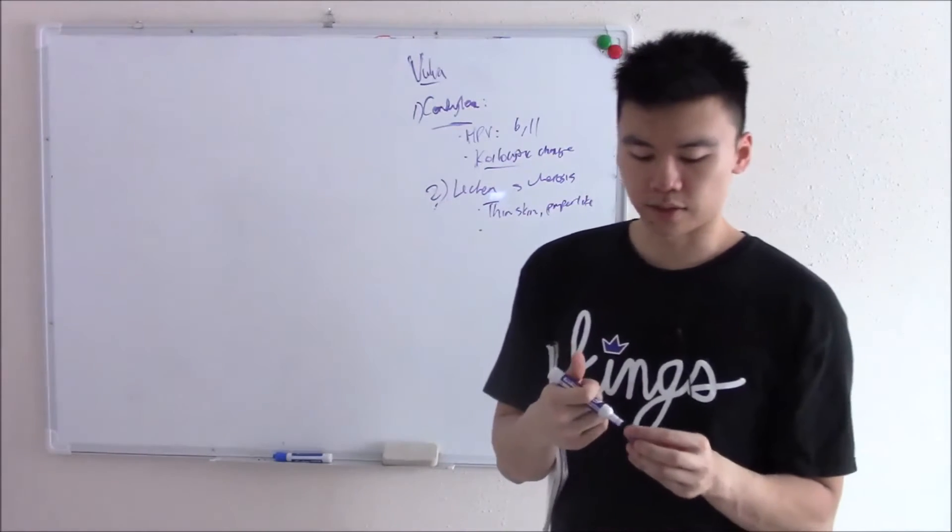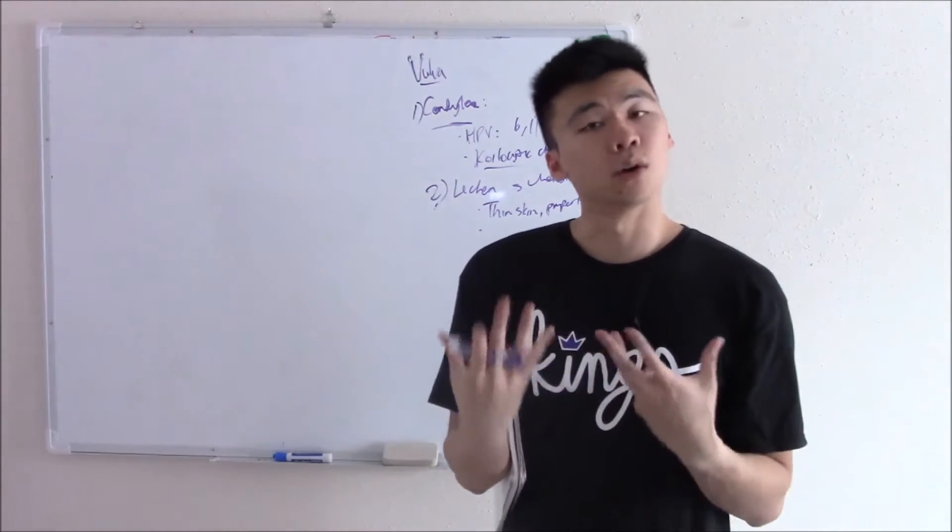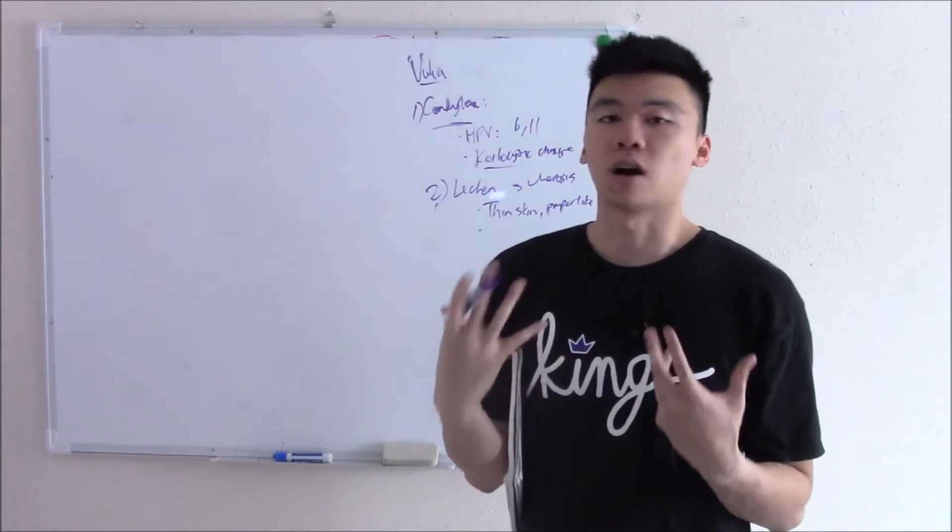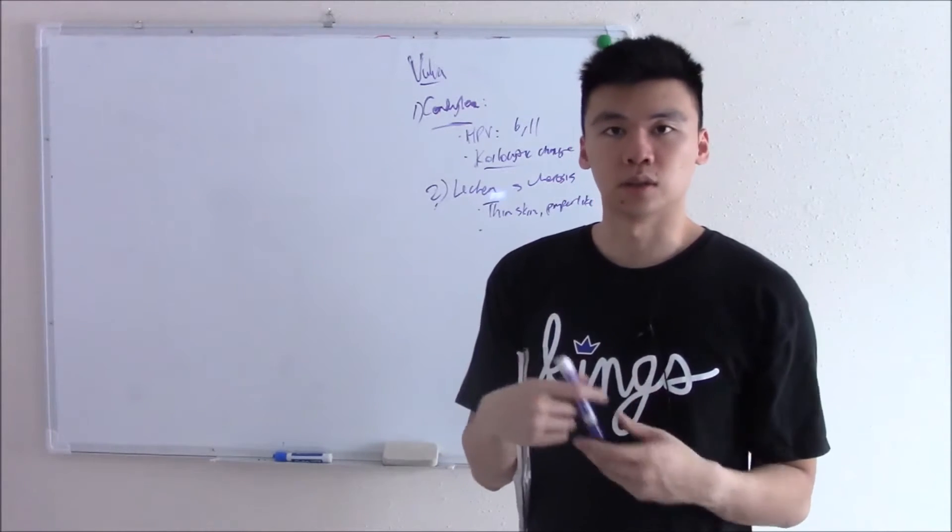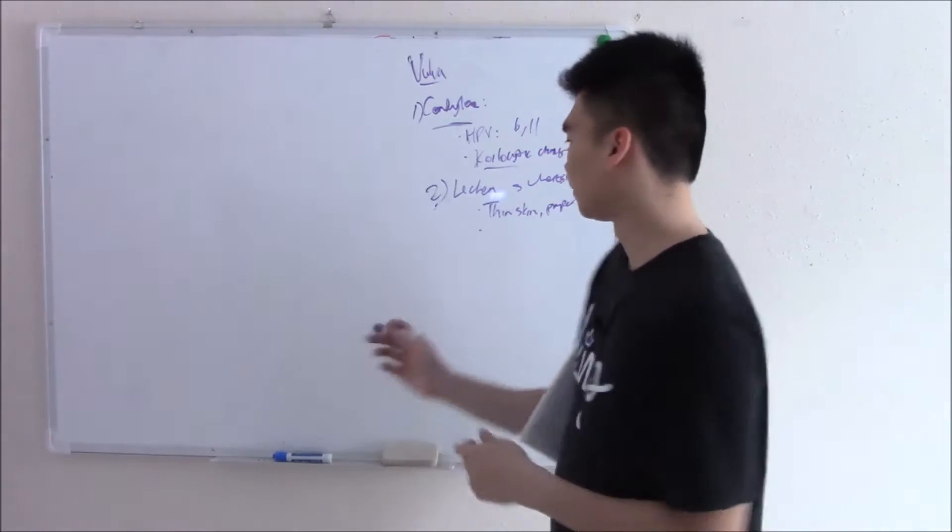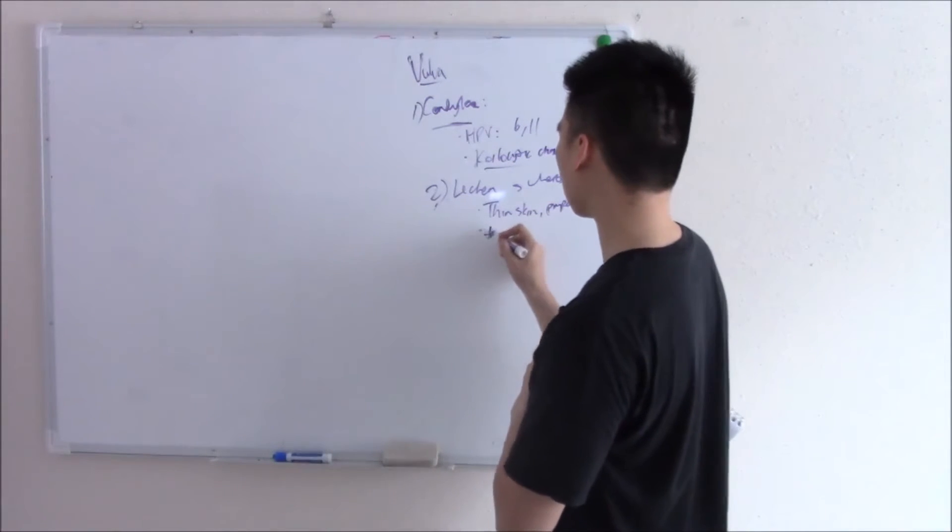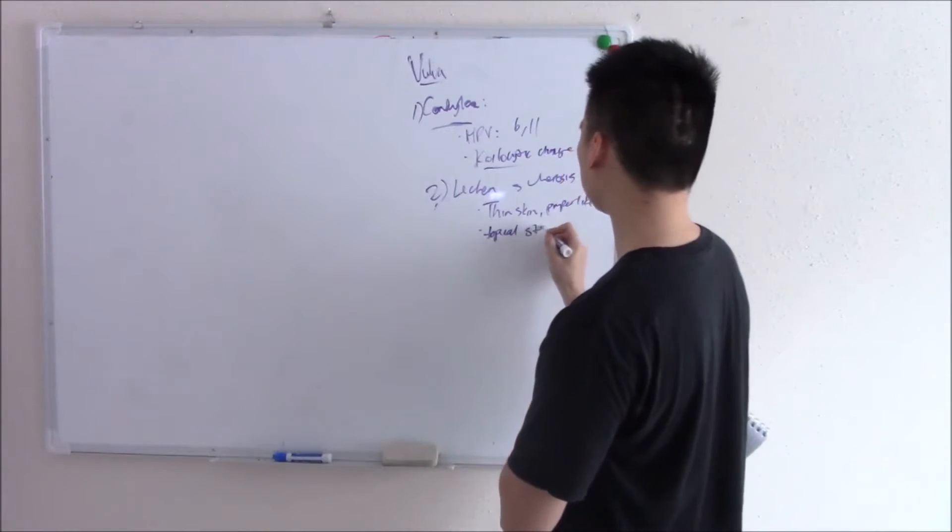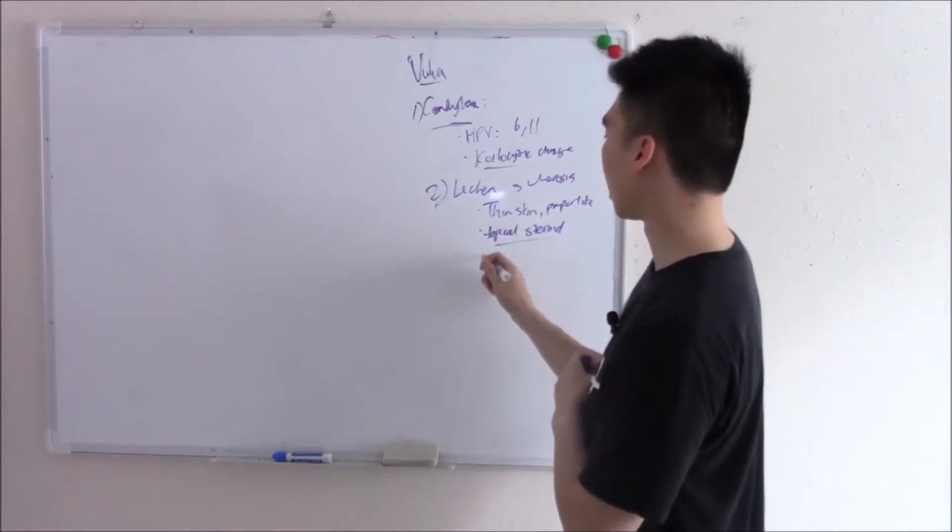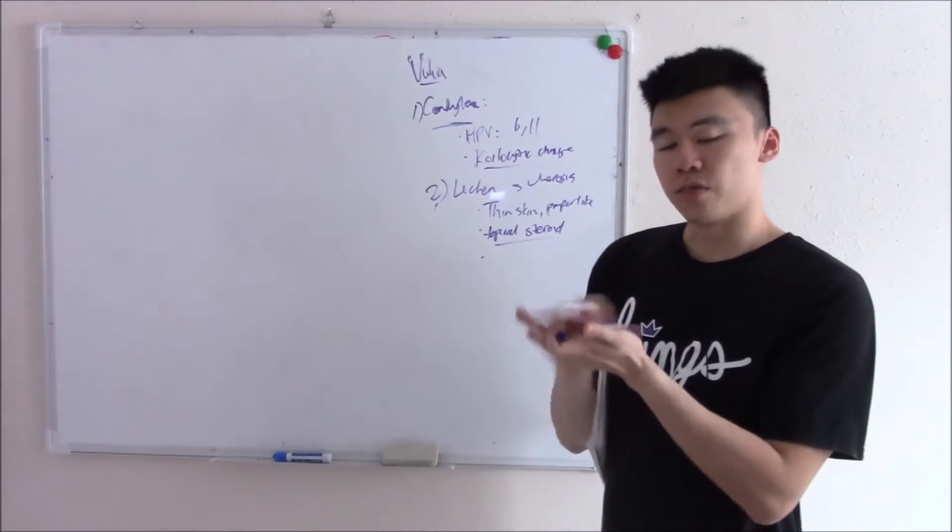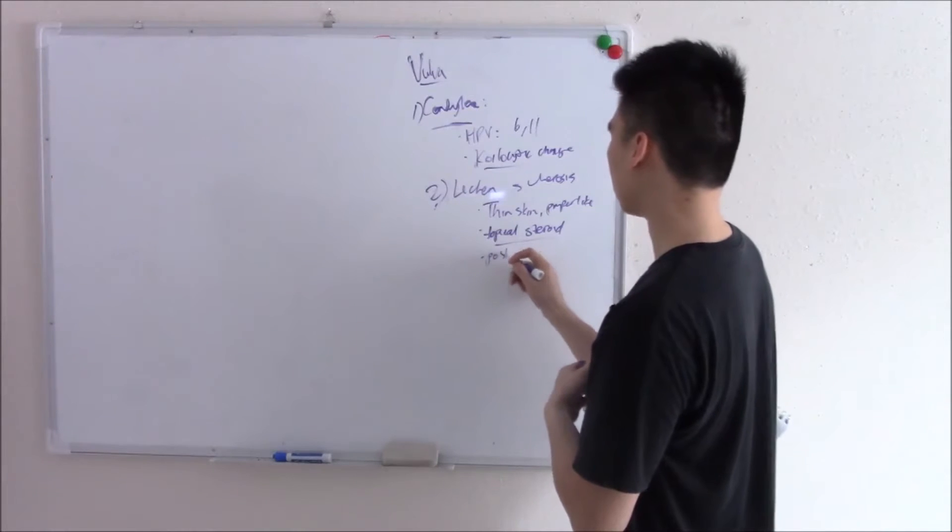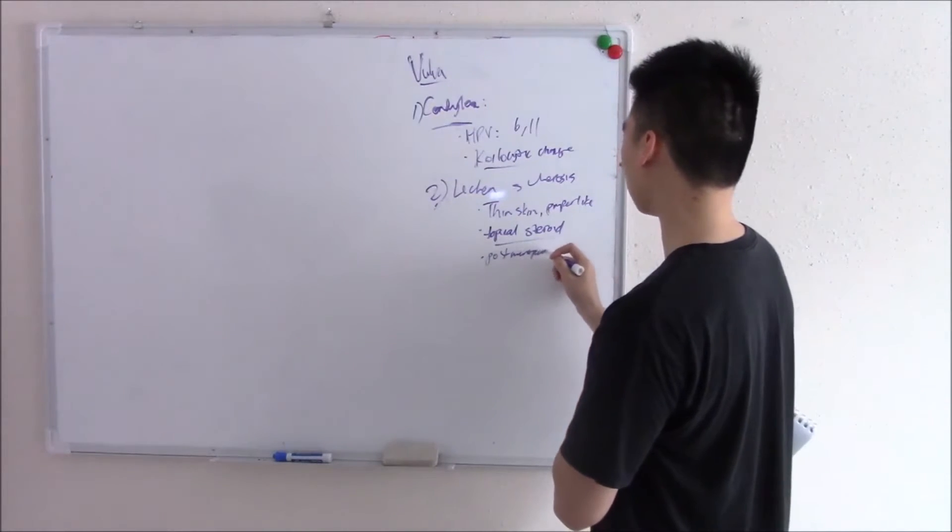Because it's seen in postmenopausal women, they think there might be some hormonal changes that go along with this. But another theory is that there's autoimmune components to it - some sort of immune reaction because to treat these you can treat them with topical steroids. Whatever the case, just know how to identify it: very thin parchment-like vulva seen more in postmenopausal women.